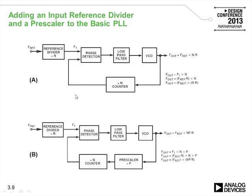Adding a reference divider between F_ref and the PFD input gives more flexibility, allowing a wider range of reference frequencies since the frequency into the phase detector is limited — depending on the technology, to 20 MHz or 32 MHz. Newer PLLs have higher PFD frequencies, but even these need to be conditioned, which is why having a reference divider is so important.